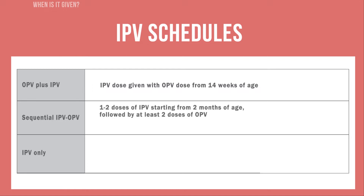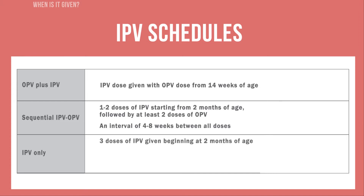In this schedule, 1 to 2 doses of IPV are given starting from 2 months of age, followed by at least 2 doses of OPV. An interval of 4 to 8 weeks is required between all doses. The third alternative is that IPV can be given as 3 doses beginning at 2 months of age, with an interval of 4 to 8 weeks between doses.